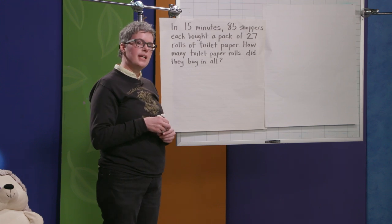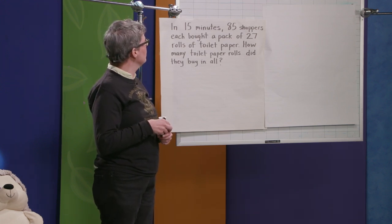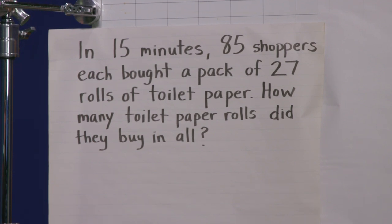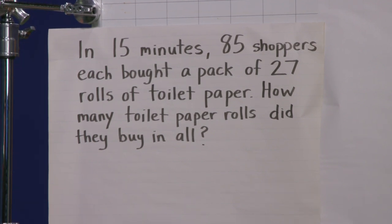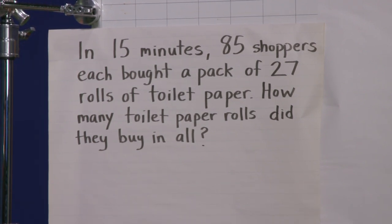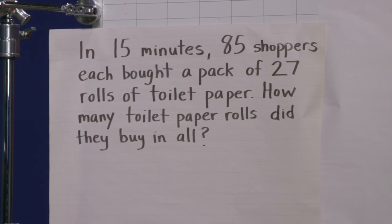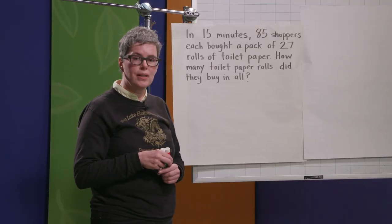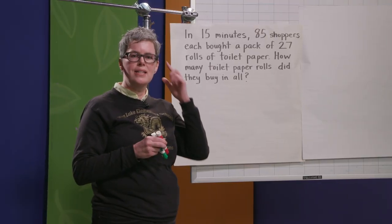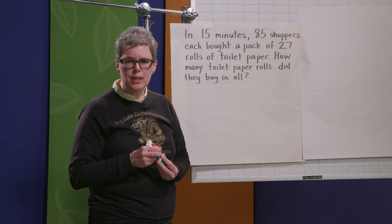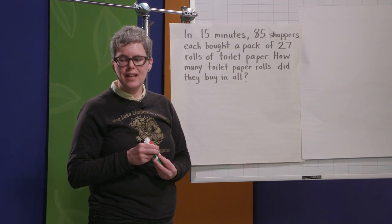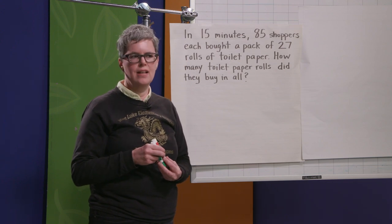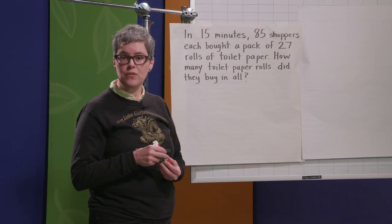So I'm going to read it and you're going to make a movie in your mind and try to imagine, you can even close your eyes, try to visualize what's happening in this story. Don't worry about numbers. Don't worry about specific information. Just what the problem's about. In 15 minutes, 85 shoppers each bought a pack of 27 rolls of toilet paper. How many toilet paper rolls did they buy in all? Yeah, Chicken Soup? Oh, this problem's about buying toilet paper. It's that simple. And they're buying it really fast. There's a lot of people buying toilet paper really fast.